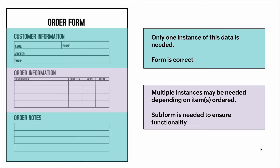Here's a visual example: we have an order form. This order form collects customer information like name, phone number, address, and email. It also contains order information like products, quantity, price, and total. Under that it has order notes. Some of the information — like customer info and order notes — only needs to be captured once, which is fine in a regular form.